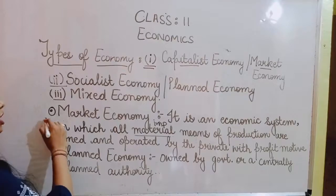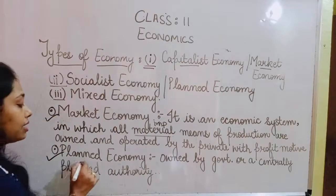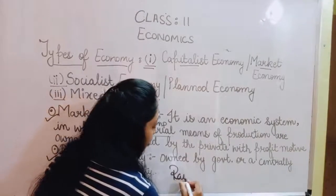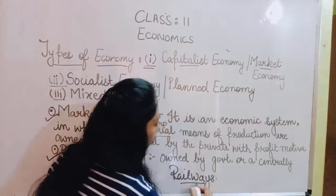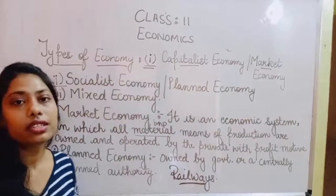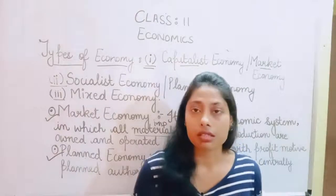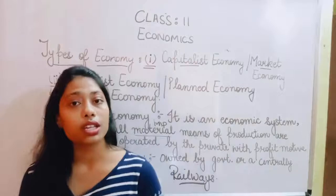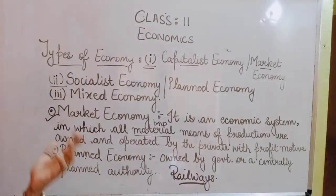An example of a planned economy is your railways. The railways are solely controlled by the government. No private sector can put down tracks and run their own private trains — that is not possible. So the railways are solely in control of your planned economy, or socialist economy, governed by the government.